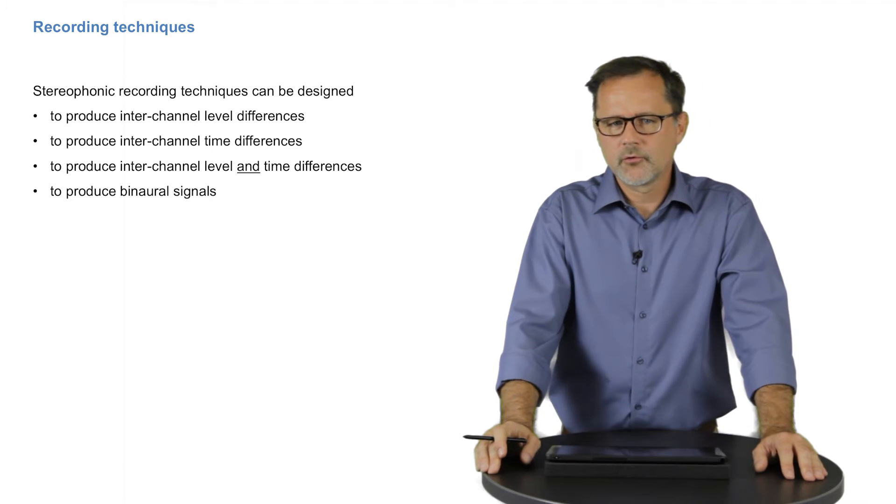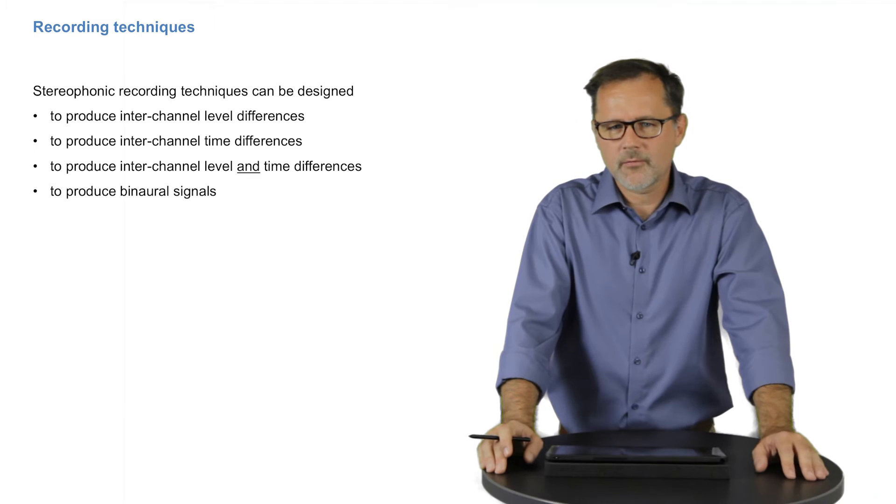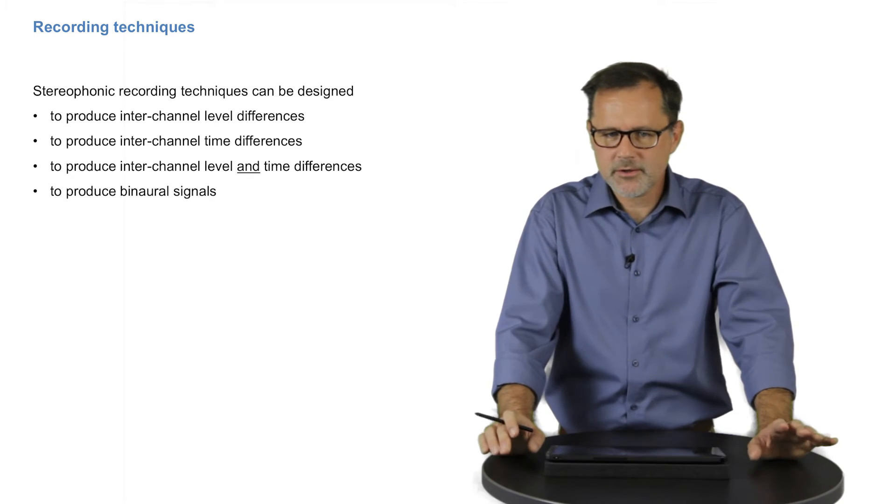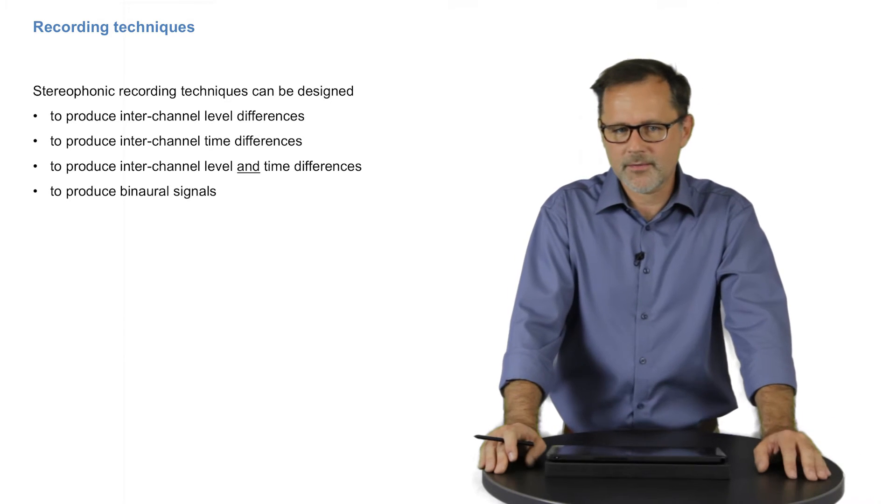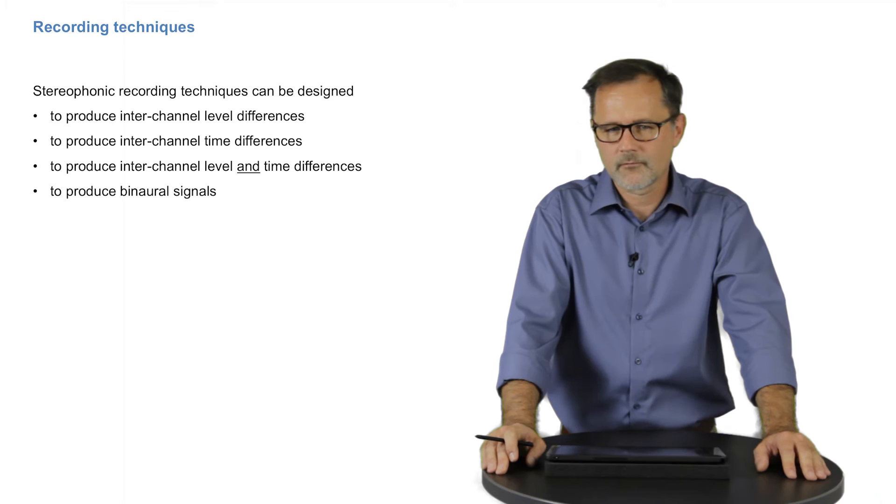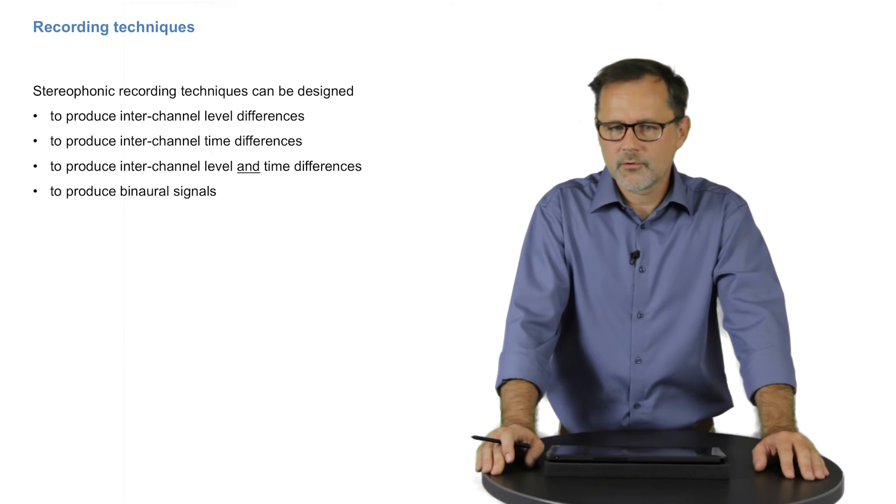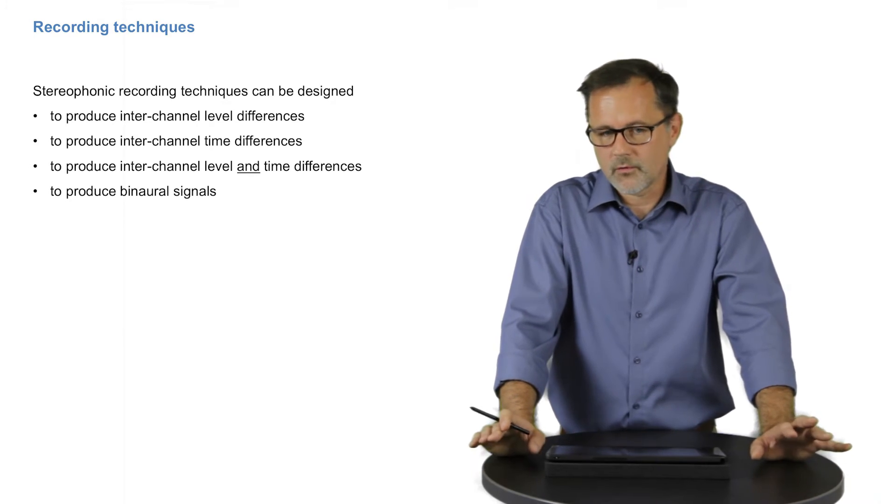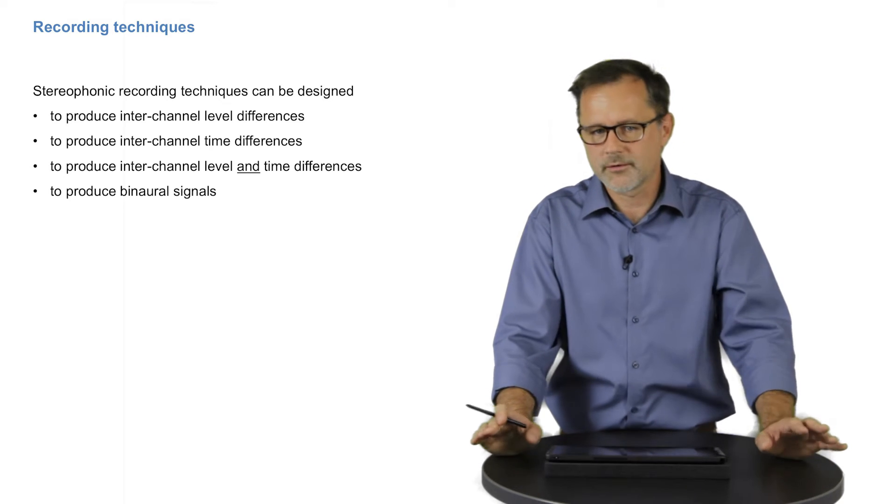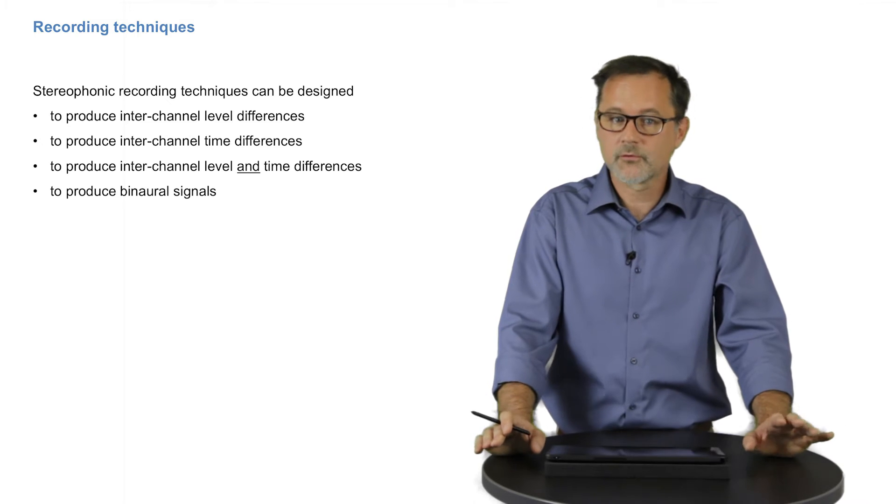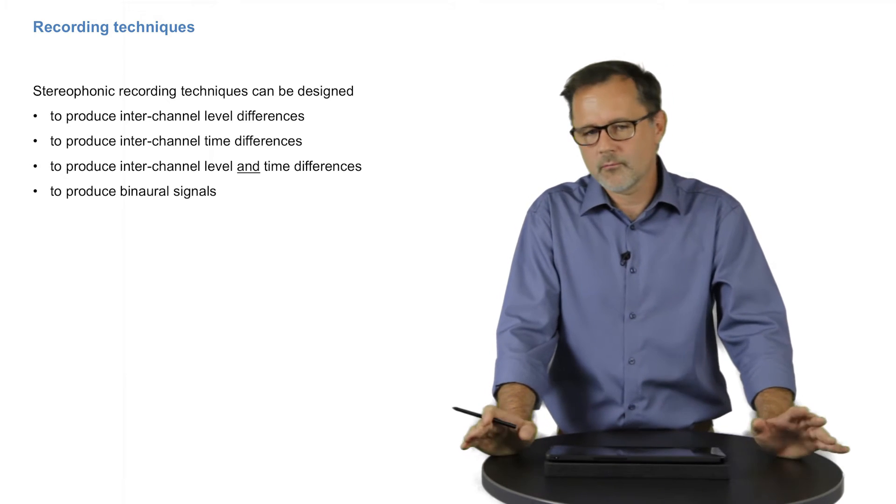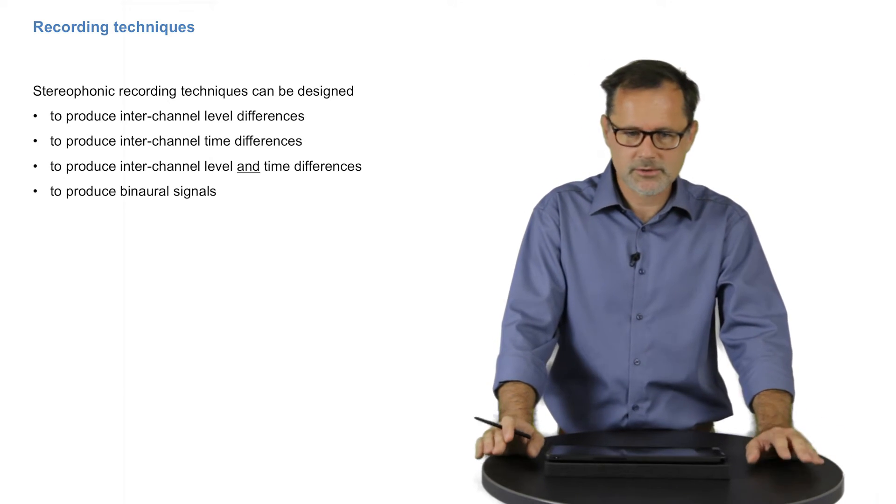The other option is to use a stereo microphone and record sound sources so that their spatial characteristics will be encoded in the two channels already at the recording stage. Consequently, you can categorize recording techniques into those that produce only interchannel level differences, or interchannel time differences, or both, with binaural recordings as a special case.